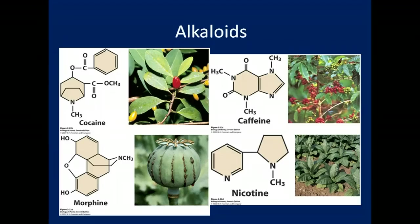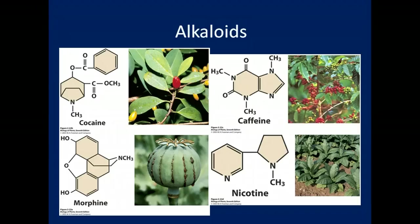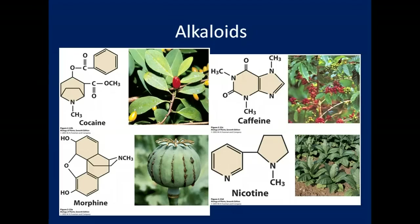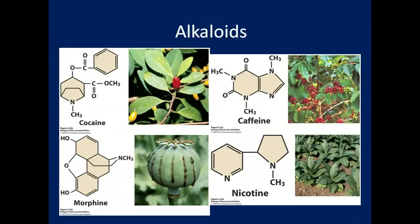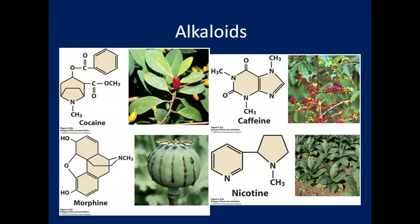We started our discussion of secondary compounds by focusing on alkaloids. Alkaloids are very important — they have pharmacological or medical effects on human beings mainly because they affect our central nervous system, giving them some physiological or psychological effect on humans. Most of these are herbivore deterrents; plants synthesize them to keep things from consuming them, though sometimes they've become common drugs of abuse in humans. We'll talk about alkaloids a lot more throughout the rest of the semester.